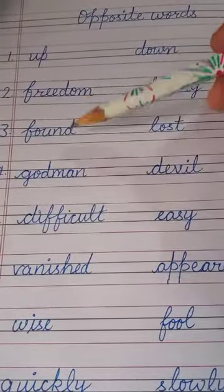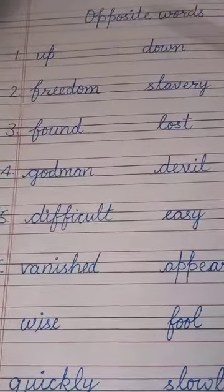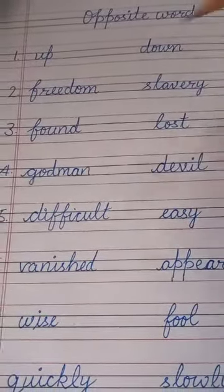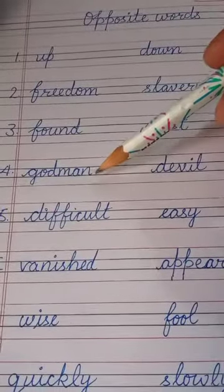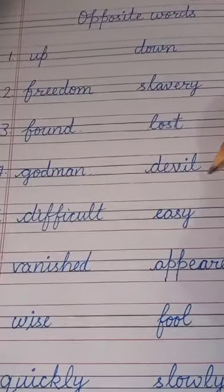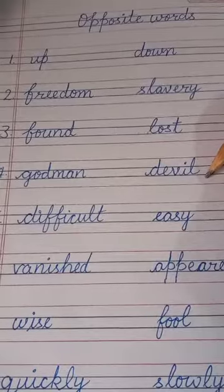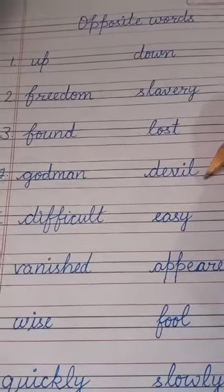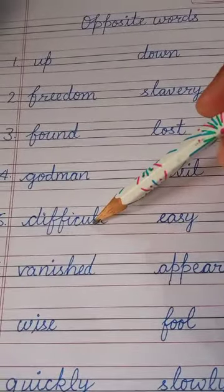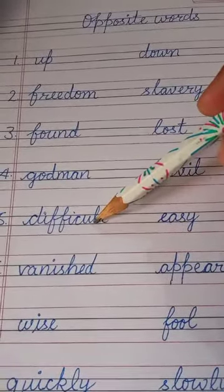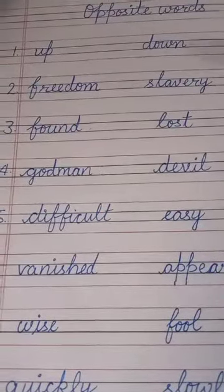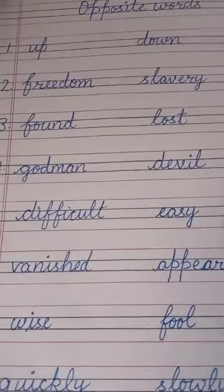Found means when we get something, and lost means when we lose something. God — its opposite is devil, monster. Difficult — when we are having any problem doing something, that work is difficult. Its opposite is easy, simple.